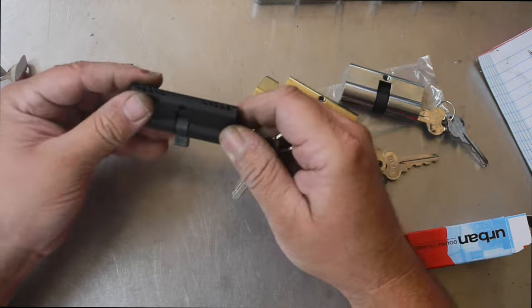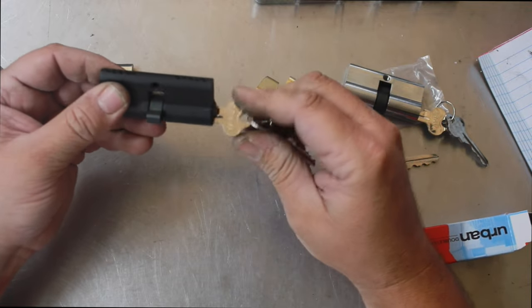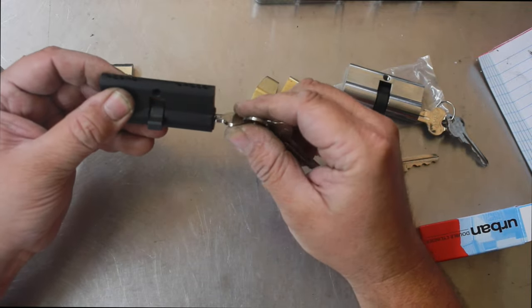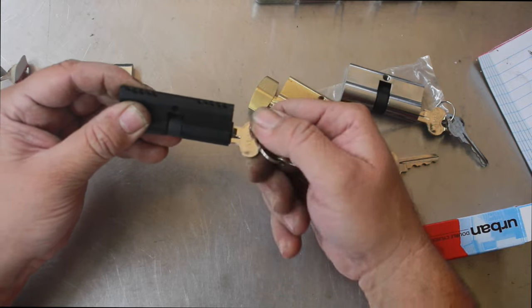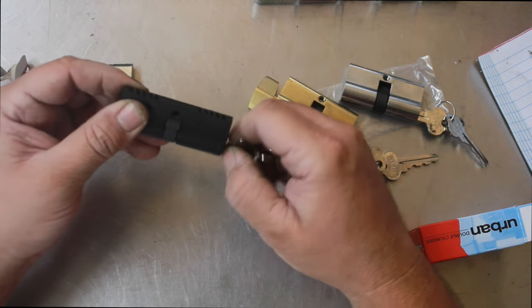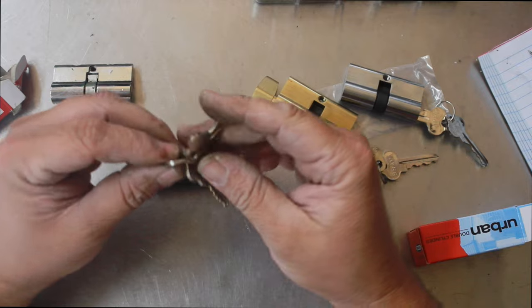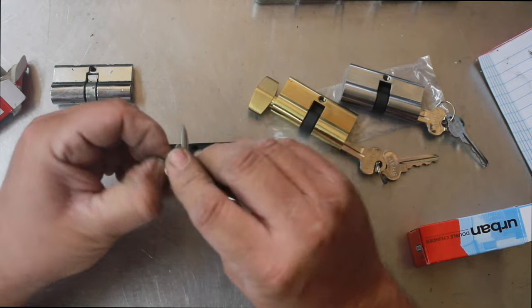What that means is, it doesn't matter where the cam is, you can put the key in, rotate it around until you hear that click, and now you picked up the cam and you can operate it. This anti-panic function is good because it does what a lot of the other cylinders can't do.